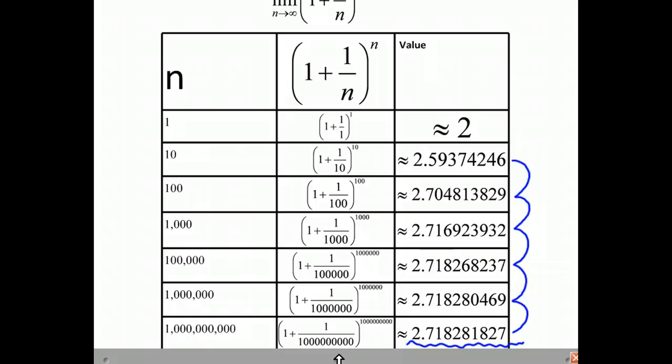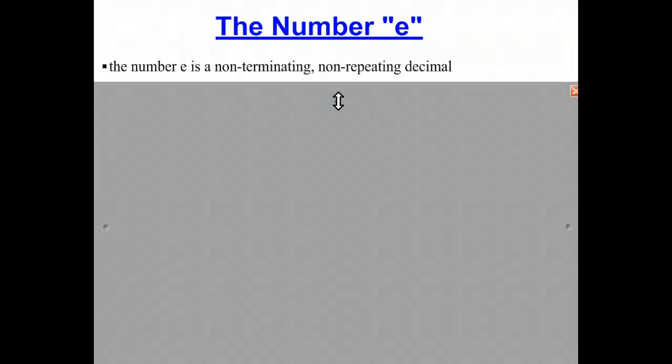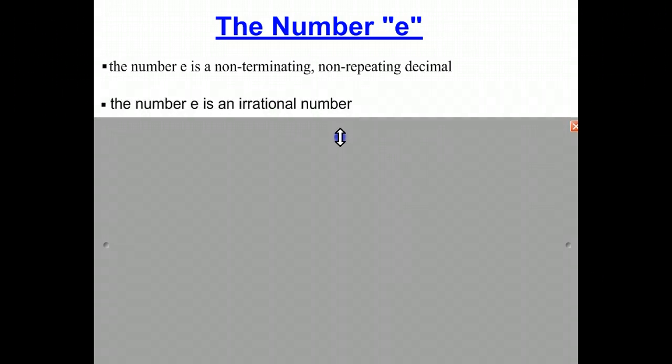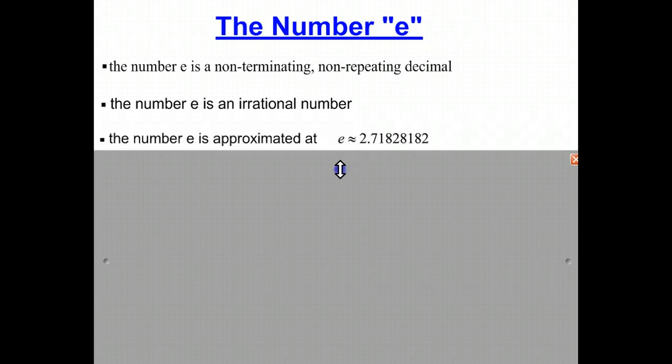And e can go on and on, and the decimals continue on forever, because the number e is a non-terminating, non-repeating decimal, which means that e is what we call an irrational number. And we approximate it at 2.718.